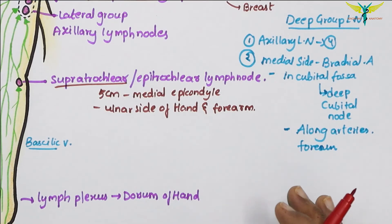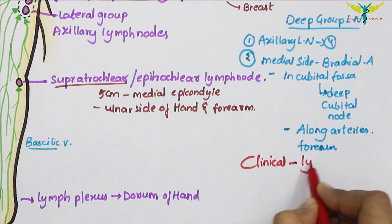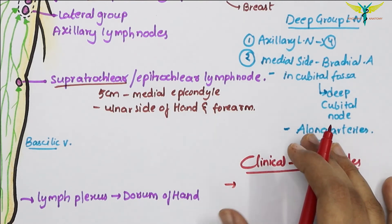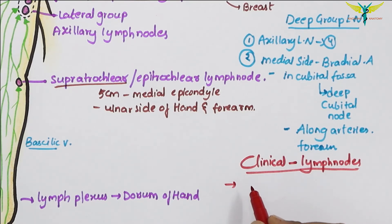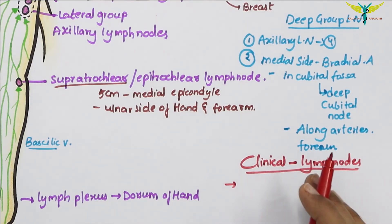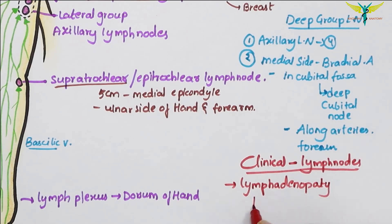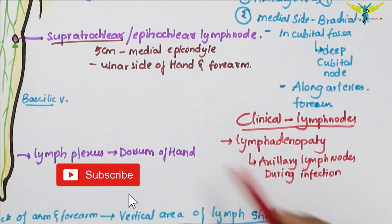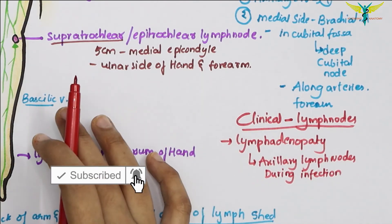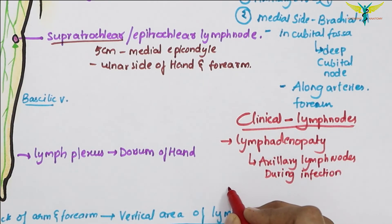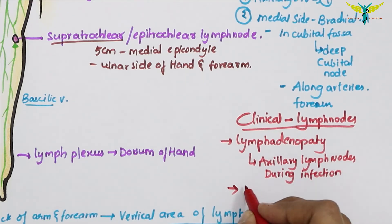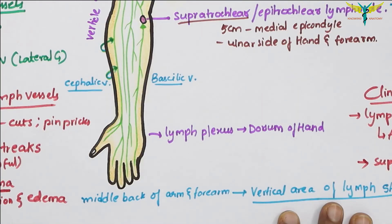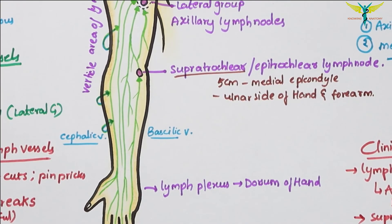For clinical correlation of the lymph nodes: the axillary group of lymph nodes may become enlarged — lymphadenopathy — and painful during any infection of the upper limb. In infections affecting the medial side of the hand and forearm, the supratrochlear lymph nodes become enlarged and tender. This is all about the lymphatic drainage of the upper limb.